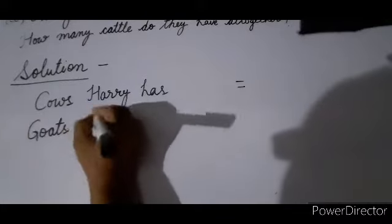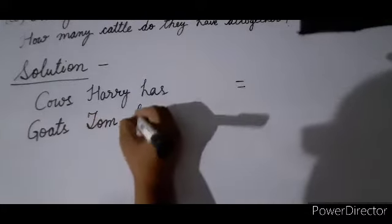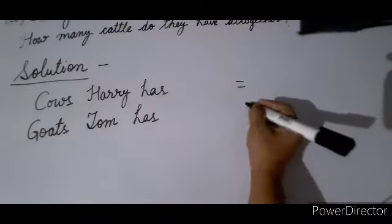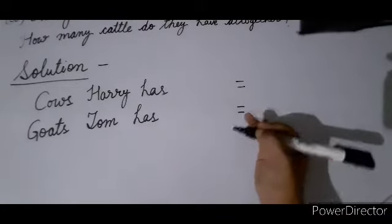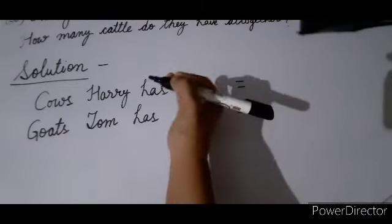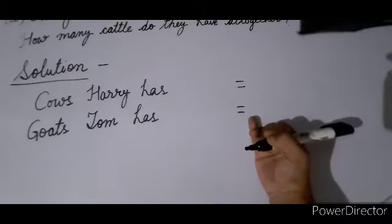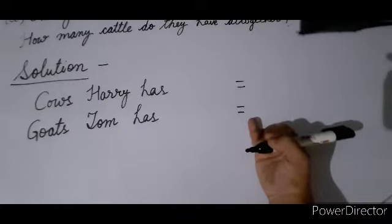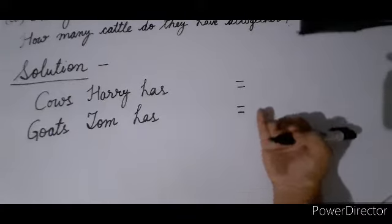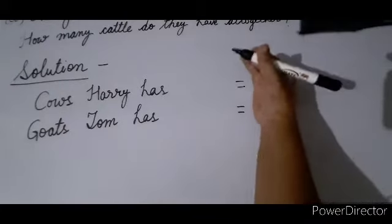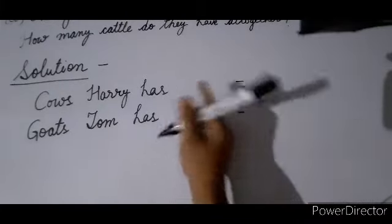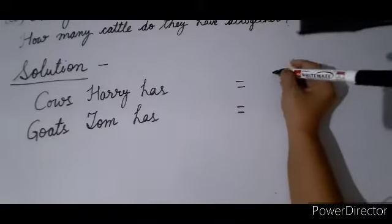Next line: Tom has goats — so write 'Tom has'. In word problems, the equal signs must be aligned one below the other. It should not happen that one equal sign is on the left and the second is on the right. Always keep the equal signs exactly one below the other.